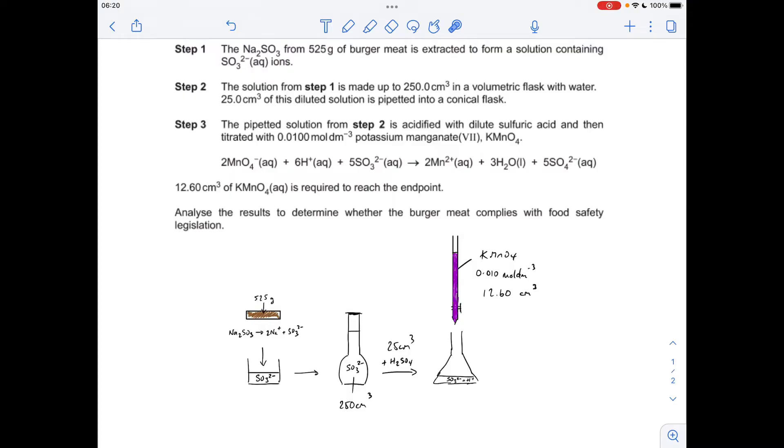So they've taken a burger, mass 525 grams, they've extracted the sodium sulphite, and they've dissolved it. So you can see from the equation there, the ratio of sulphite ions to sodium sulphite is 1 to 1. So the sulphite ions are in here now, they're made up to 250 in a volumetric flask.